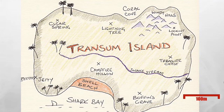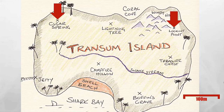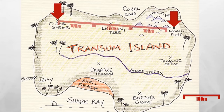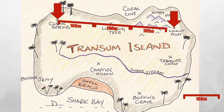So let's say we want to work out how far it is from Clear Spring to the Lookout Point. What we need to know is how many of those red scale markers will fit in between those two points. Three and a little bit more. So I can estimate the distance between Clear Spring and Lookout Point as being about 320 metres.